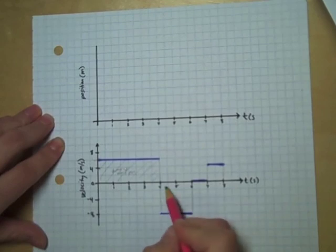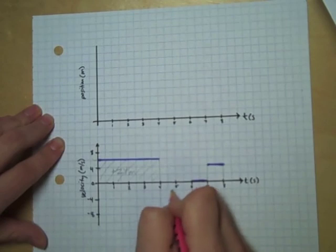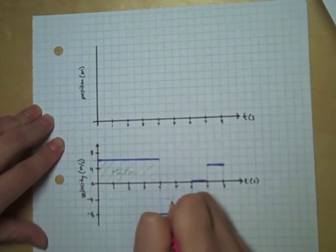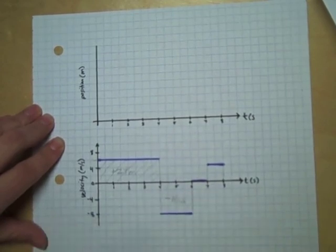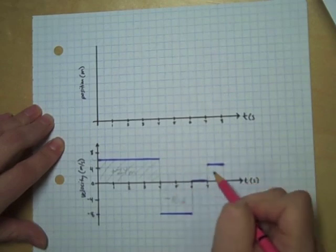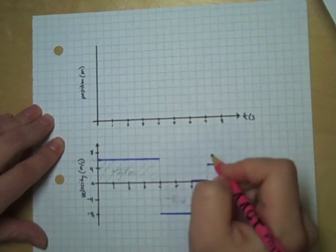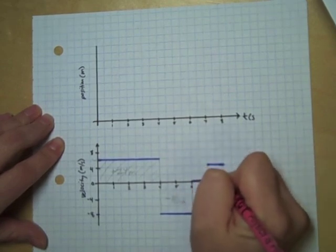Here I have a negative 8 times 2, and so that's negative 16 meters, so 16 meters in the negative direction. And here I have 4 times 1, so this is positive 4 meters.